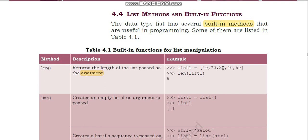For example, list one is [10, 20, 30, 40, 50]. Writing len(list1) will return the length of list one, which is the number of elements — five. So the output will be five.